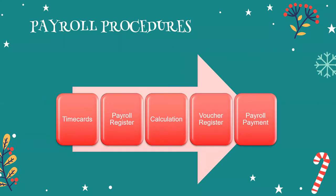The payroll procedure starts with accumulation of hours via time cards. If the process is automated, data flows straight to the payroll register. If manual, you encode one by one — imagine doing that for 1,000 employees! That's why factories have dedicated encoders. High-tech companies use fingerprint or even iris scanners.